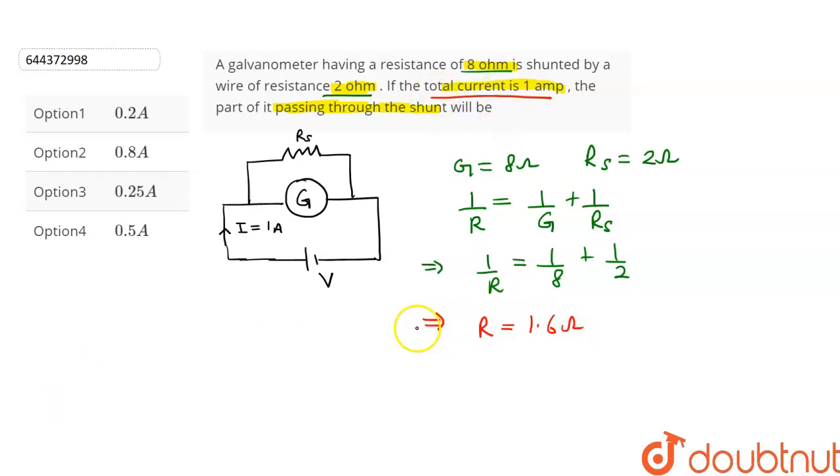The total current in the circuit is 1 ampere. So, using Ohm's law, we can calculate the voltage in the circuit. We know that V is equal to I into R. It is given that current is 1 ampere and the resistance of the circuit is 1.6 ohms. So, the voltage in the circuit V comes out to be 1 into 1.6 which is equal to 1.6 volts.